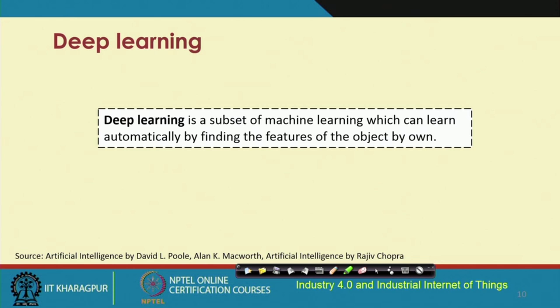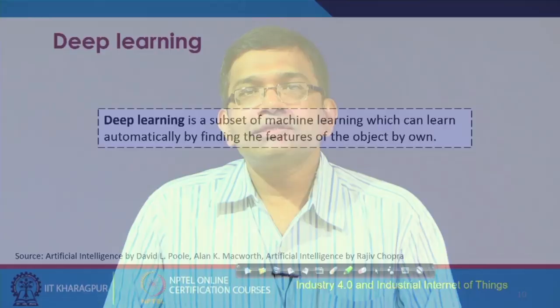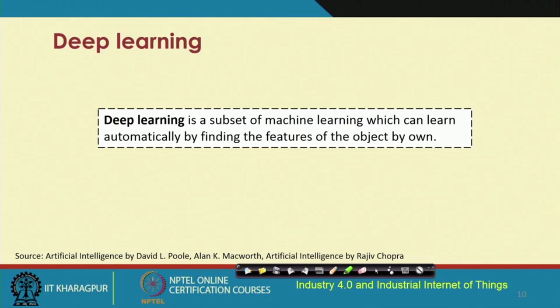Deep learning is a subset of machine learning which can learn automatically by finding features of objects on its own. Deep learning uses deep computational structures to come up with efficient algorithms that perform things with greater accuracy. However, deep learning is not the only solution — there are traditional machine learning schemes which are also advantageous in certain contexts. You can use deep learning or non-deep learning methods to solve certain learning problems depending on the requirements.